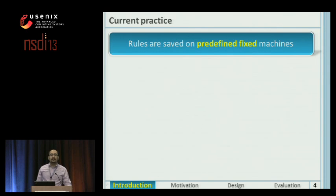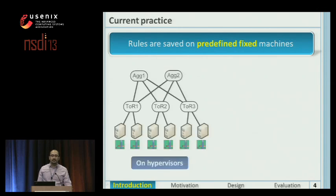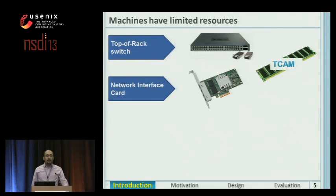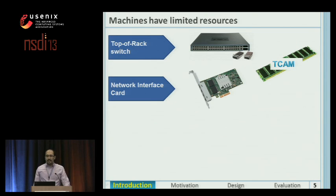In the current practice, data center operators save rules on predefined fixed machines. For example, they save rules only on hypervisors, at servers, or just the internal switches. But machines have limited resources, and as a result, they can only support a limited number of rules.